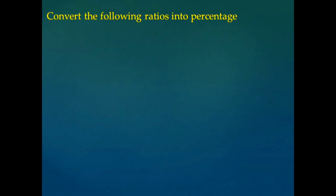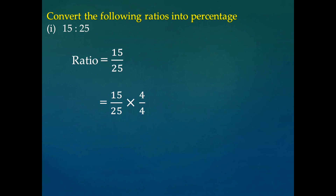Consider the next type of question: convert the following ratio into percentage. The first problem is 15 is to 25. As we know, to convert this into percentage, the second term must be 100. So the ratio is 15 divided by 25. To get 100 in the denominator, we multiply by 4. So we have 15 divided by 25, multiplied by 4 over 4, giving us 60 divided by 100. That is 60%.